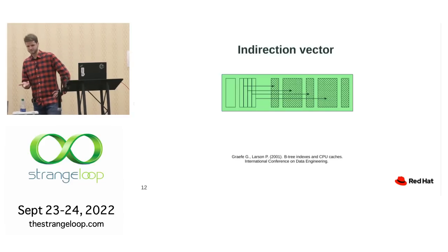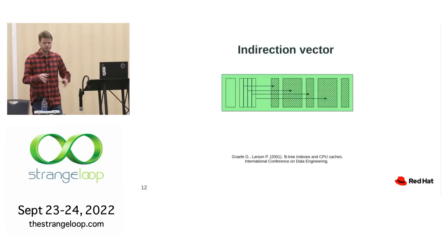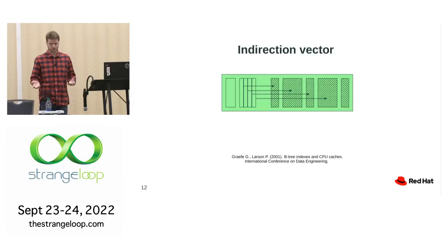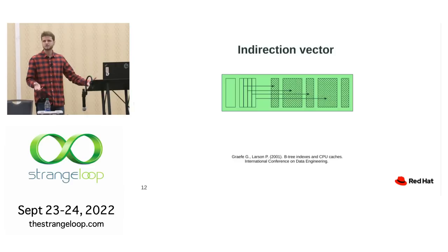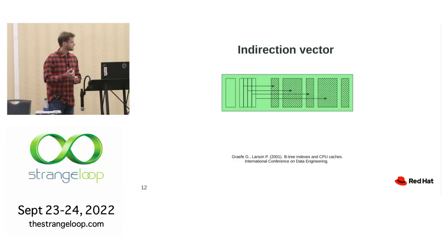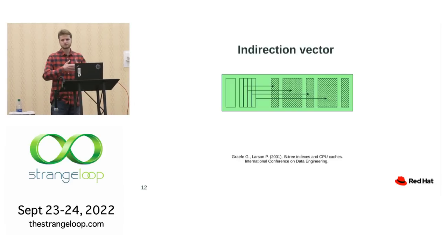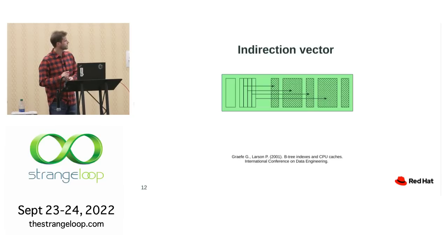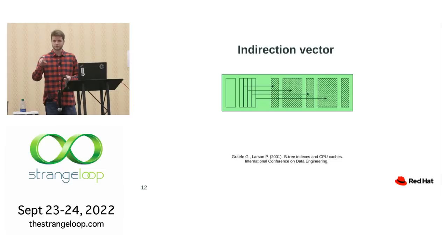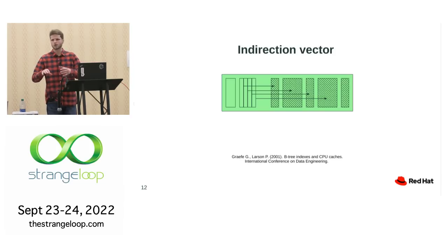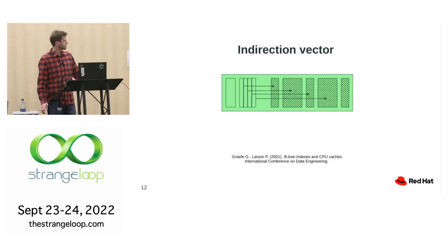Another very interesting topic is the indirection vector. Normally it's used even outside an optimization context because it's a useful technique for space management on the page. The structure of a B-tree page is much more complicated than I showed before: we have a header, then an indirection vector — essentially a set of pointers to actual values positioned at the end of the page, which are variable size.